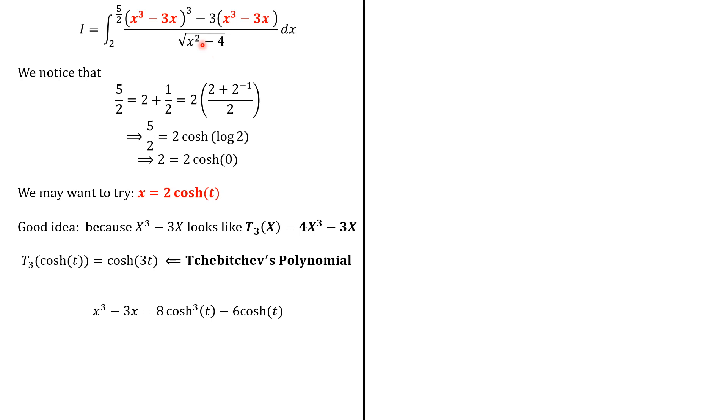We first start by x³ - 3x with x = 2 cosh(t). So we have 8 cosh³(t) - 6 cosh(t). So we factor to have 2 times this polynomial T₃ evaluated at cosh(t). So we know that the whole thing will give 2 cosh(3t). So we keep going because actually this polynomial is applied to itself.